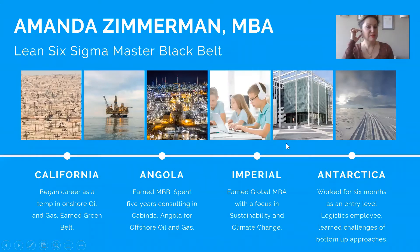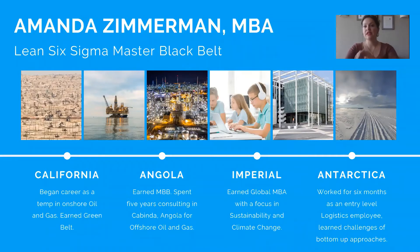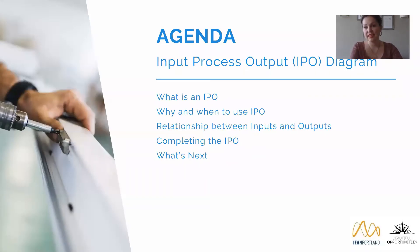A little bit about me. My name is Amanda Zimmerman. I'm a Lean Six Sigma Master Black Belt and also have my Master's of Business Administration. I've spent about 10 years in Lean Six Sigma and was in oil and gas for about a dozen years. I spent six years in California before moving to Angola for five years running Lean Six Sigma projects for an oil and gas company there. I eventually came back to the U.S. and Europe, did some consulting while earning my Master's, and ended up in Portland working for a local non-profit software company. I spent the last six months in the Antarctic working as a supply tech, supporting all the science that goes on down there.